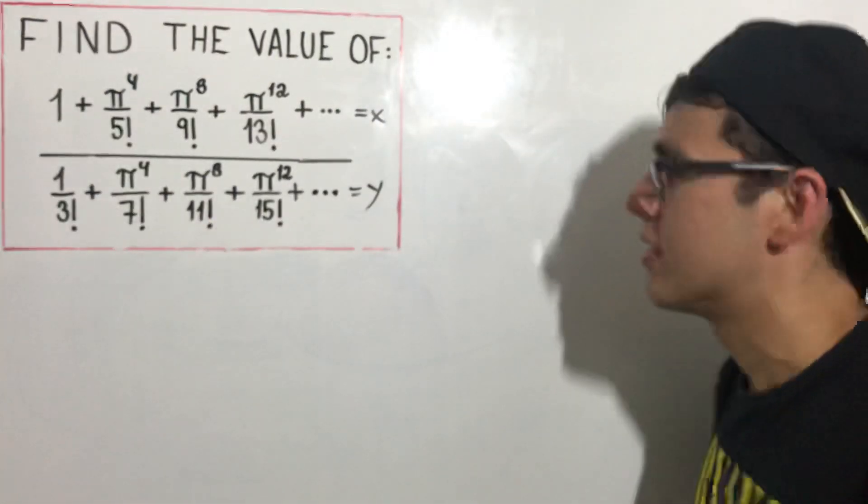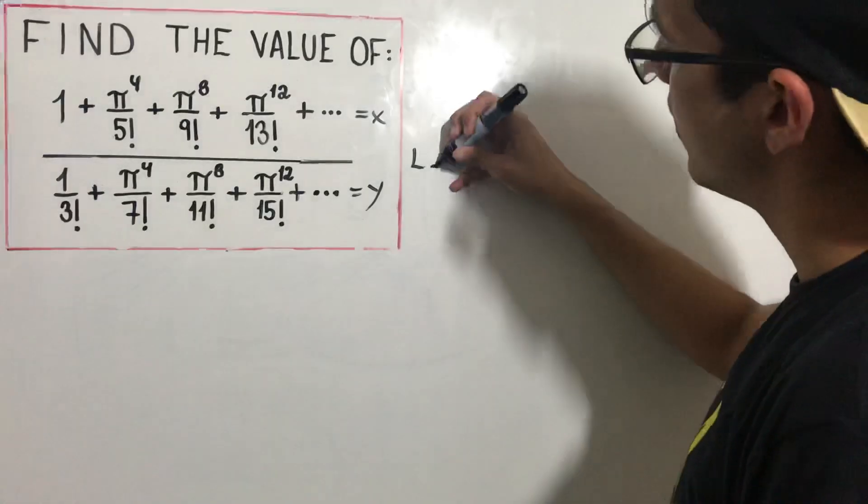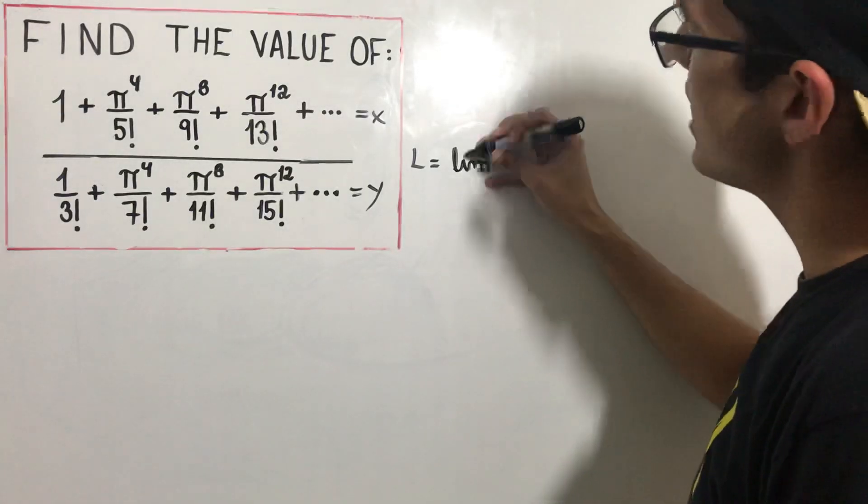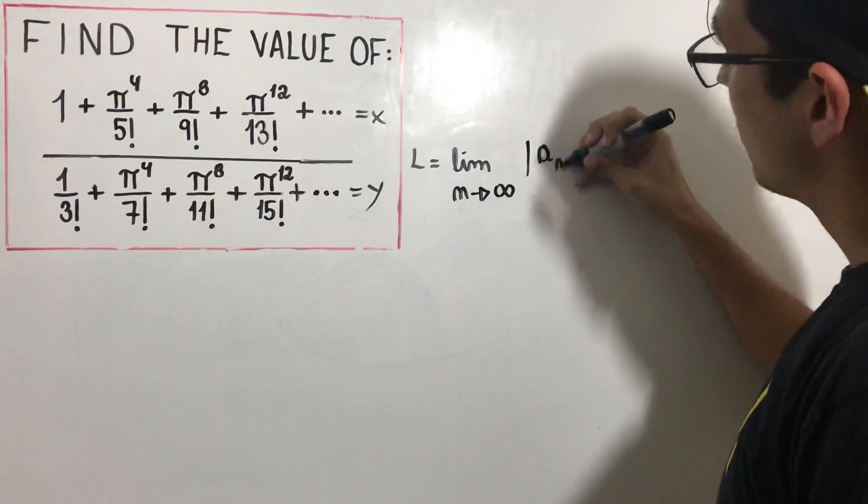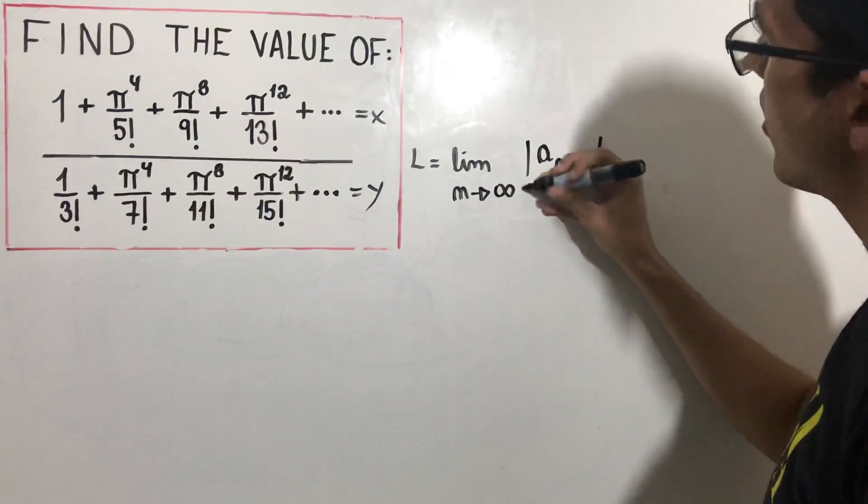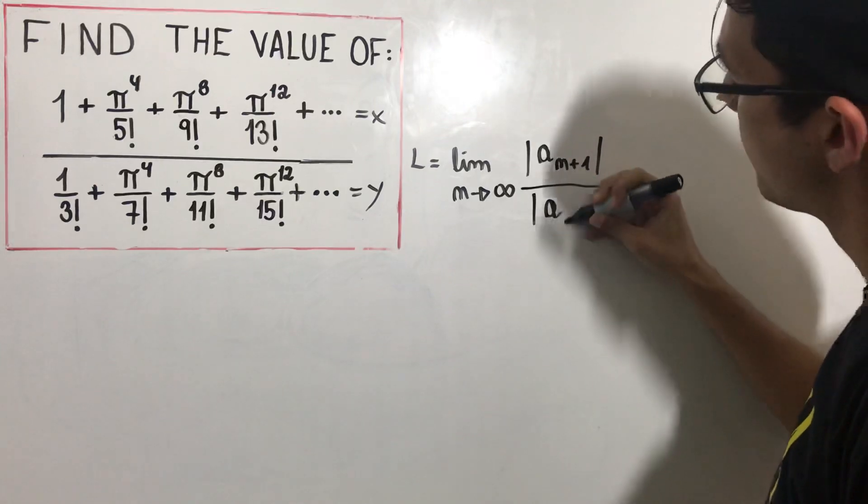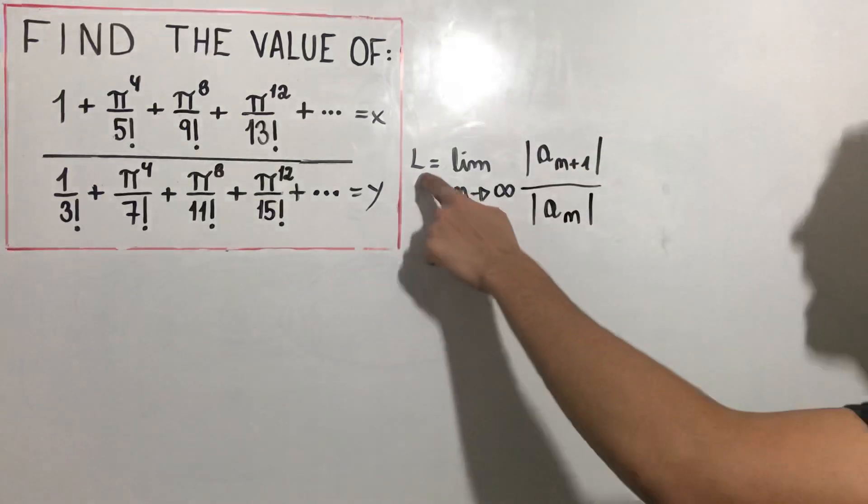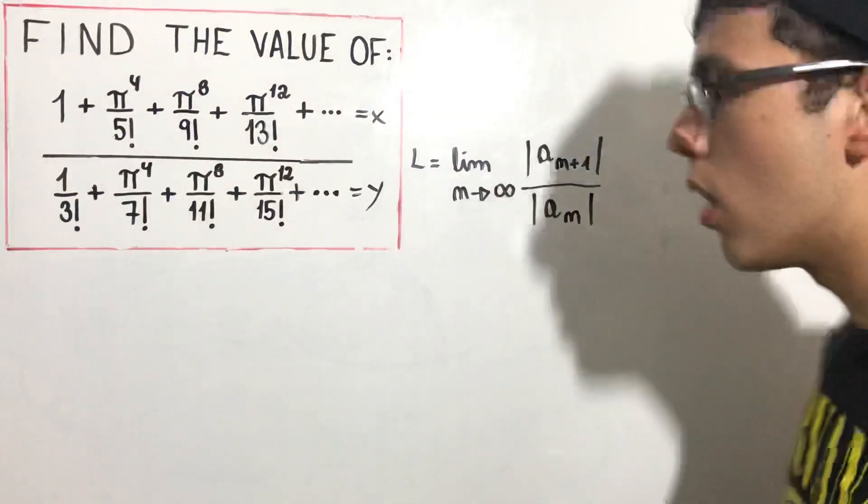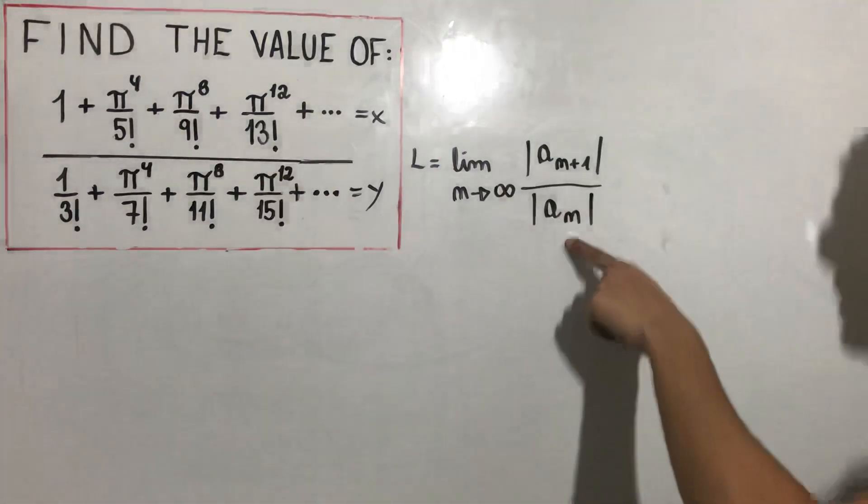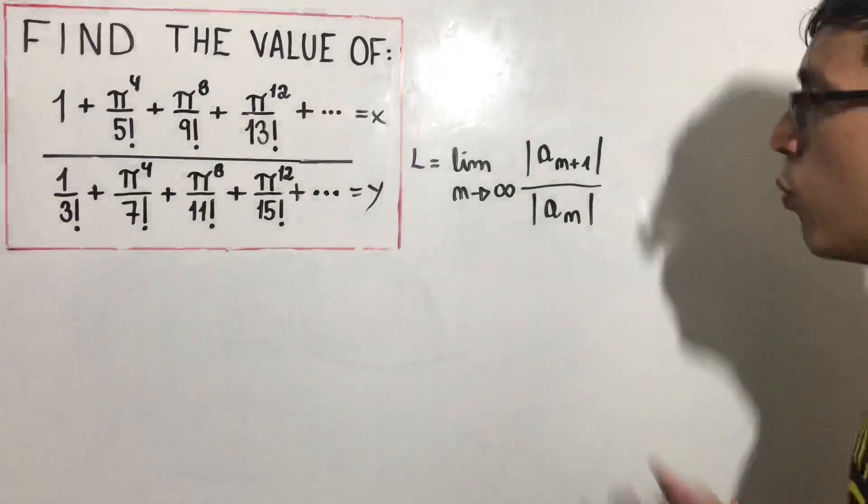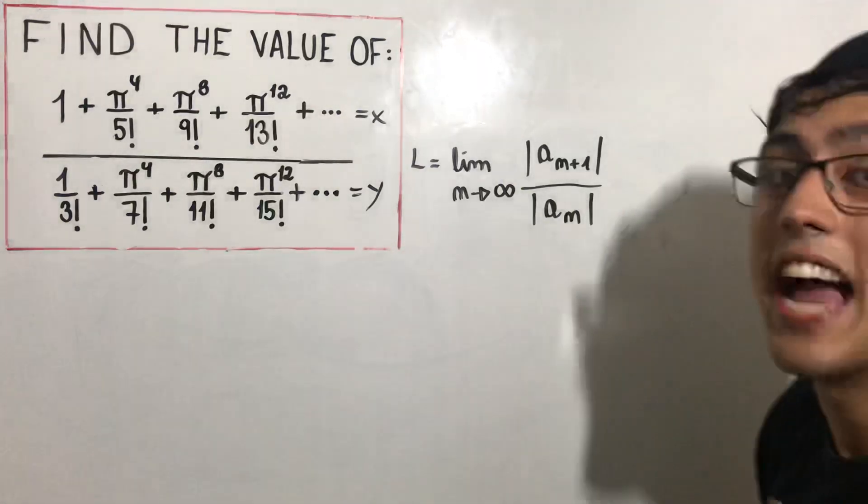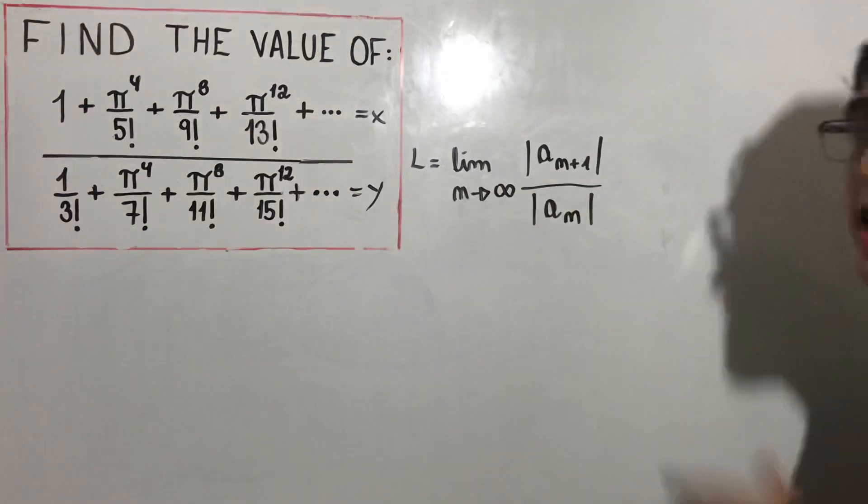What am I talking about? L equals limit as n goes to infinity of a_n+1 over a_n. If L is smaller than 1, the a_n series converges. If L is bigger than 1, the a_n series diverges. If L equals 1, we cannot say anything about it.